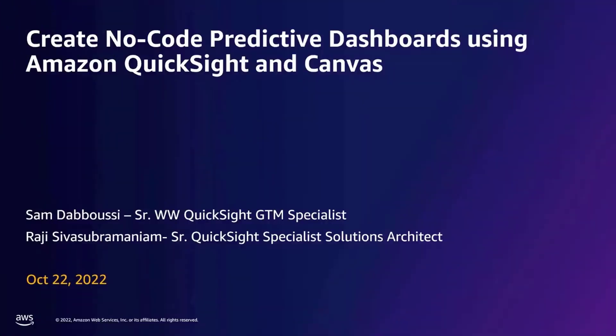Hello, I'm Sam Dabusi, a Senior QuickSight Go-to-Market Specialist with AWS, and I'm joined by Raji Sivasu Brahmaniam, a Senior QuickSight Solutions Architect.